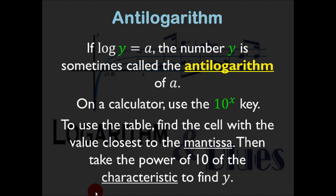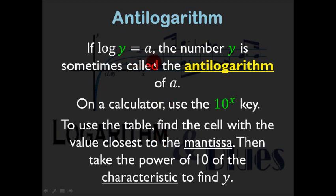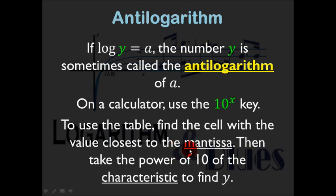The antilogarithm: if log y = a, the number y is called the antilogarithm, or antilog, of a. On a calculator, use the 10^x key, often found next to or as a second function of the log key. Using a table, rewrite a as the sum of its characteristic and mantissa. The characteristic is always the whole number immediately less than your value of a — for example, if a = −3.5, the characteristic is −4.